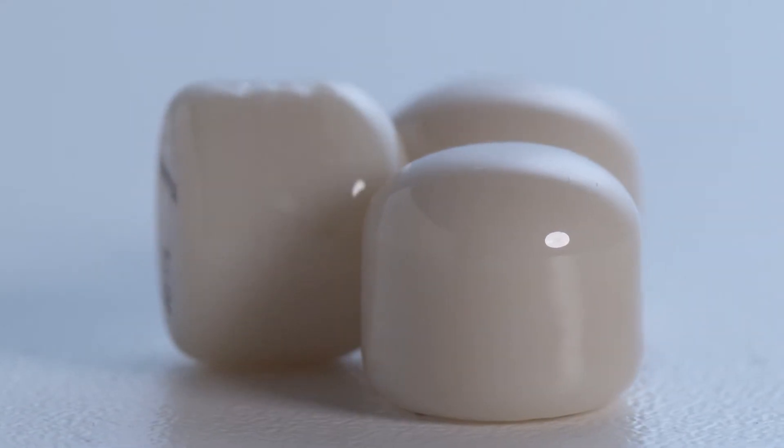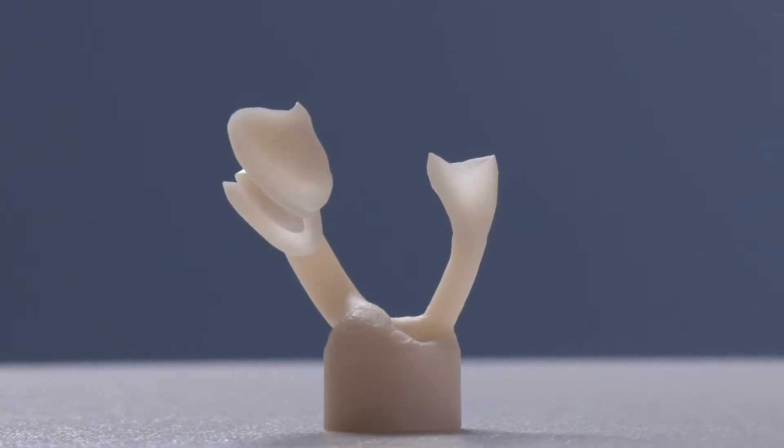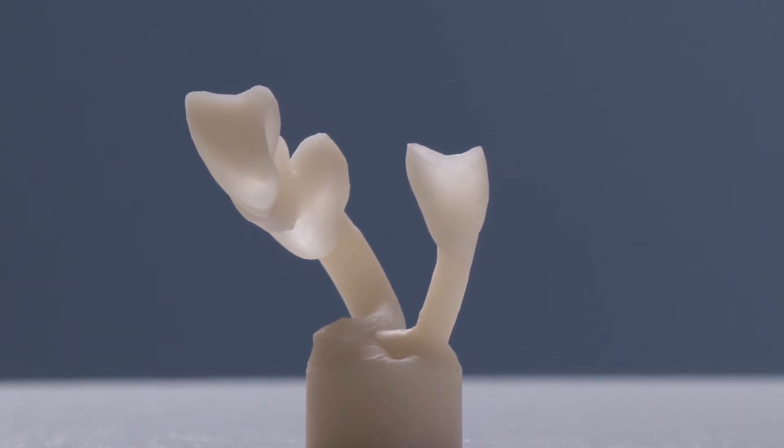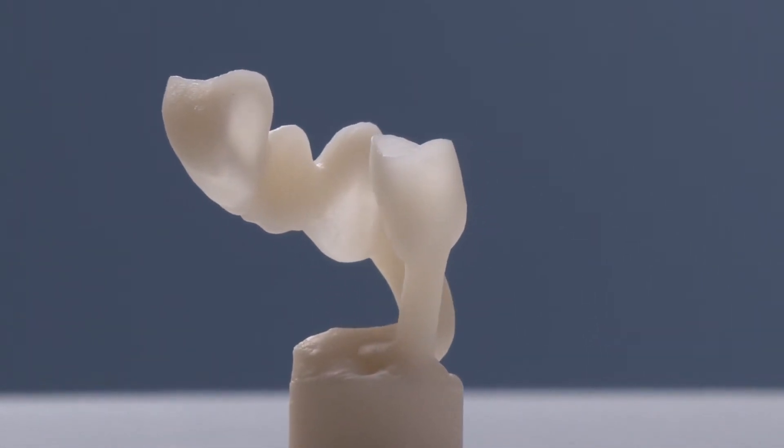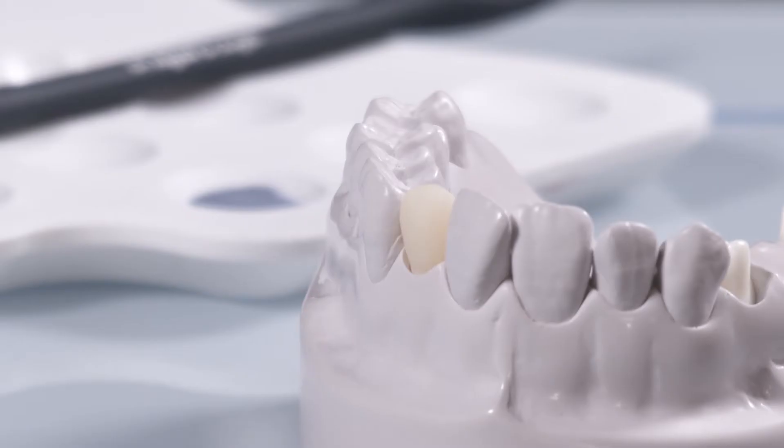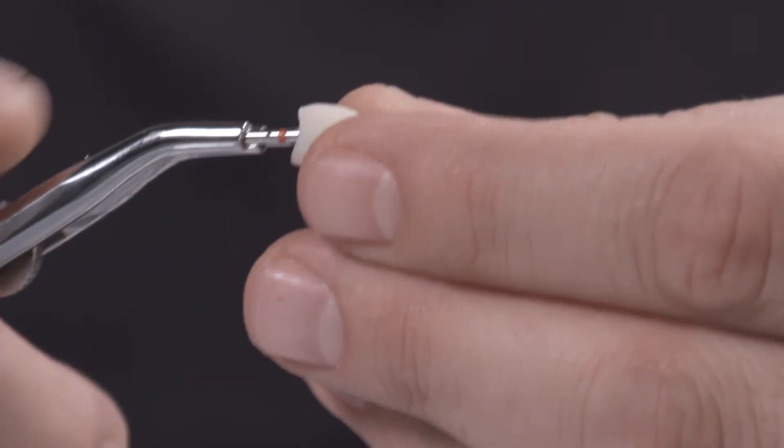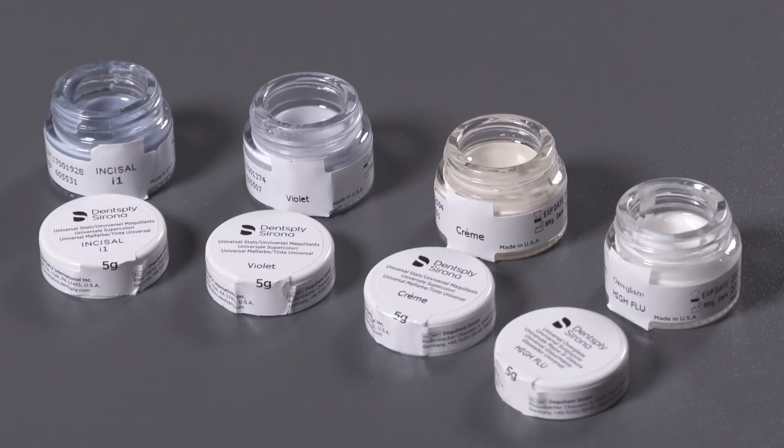Due to the exceptional light optical properties of Seltra Press, you can achieve excellent aesthetics quality already in a monolithic restoration. Customization with only three universal stains and the final glaze can be carried out quickly and accurately.